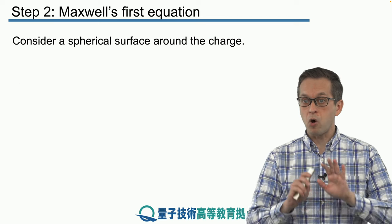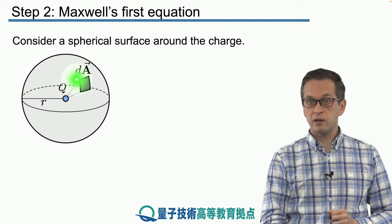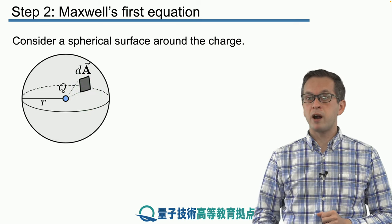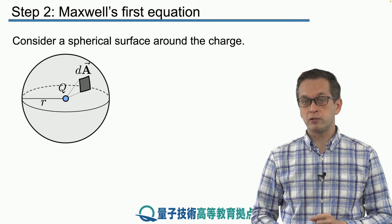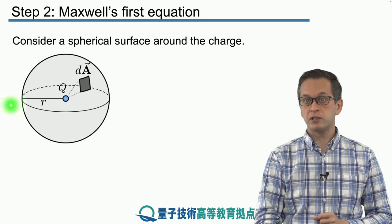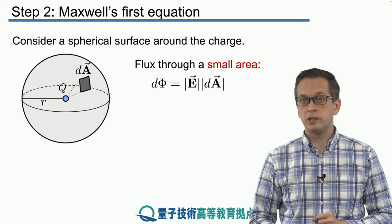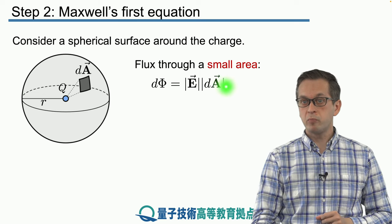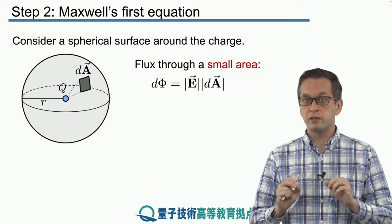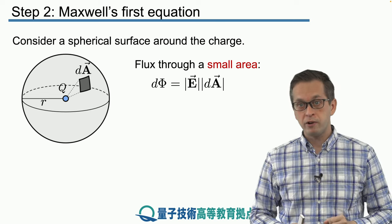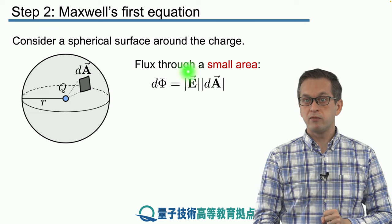Now we're going to consider a whole closed surface around the charge. We've got our charge Q and we consider a fictitious spherical surface with some radius R. The flux through a small area dA is straightforward to calculate. We drop the cosine θ term here because it doesn't matter which point on the sphere you consider — the electric field passing through that point will always be perpendicular to the surface area, meaning the flux is always maximized.